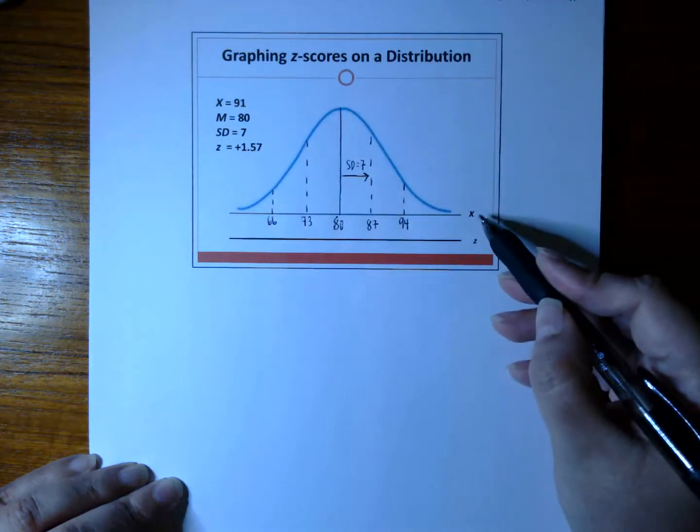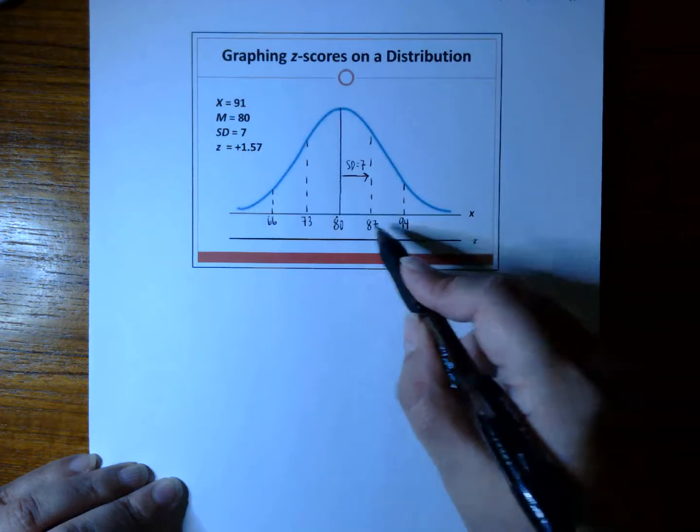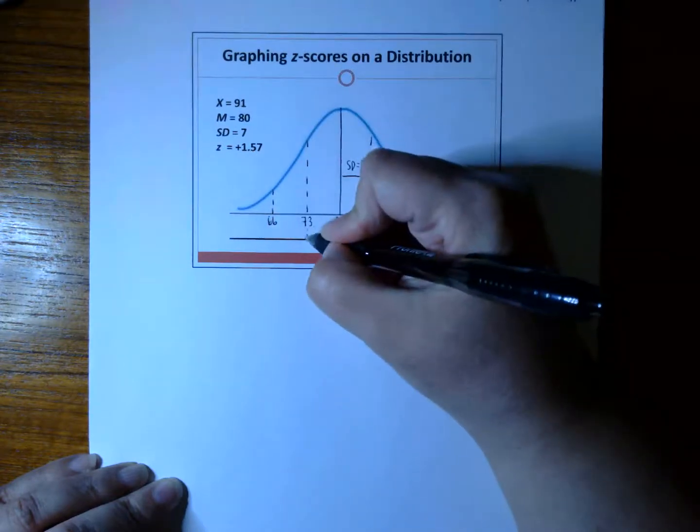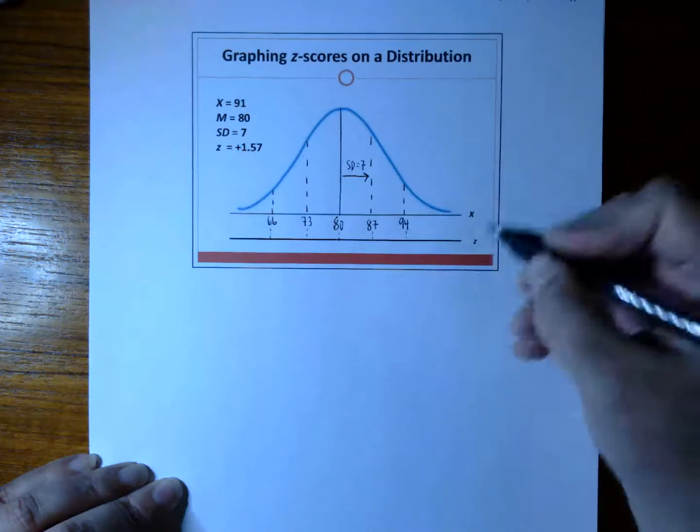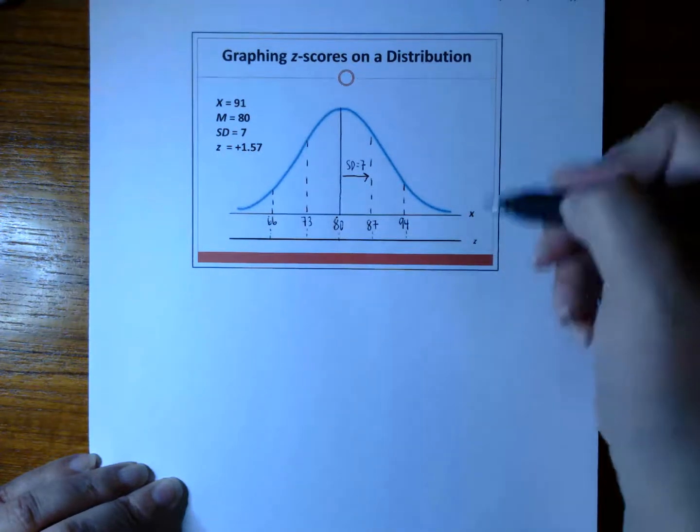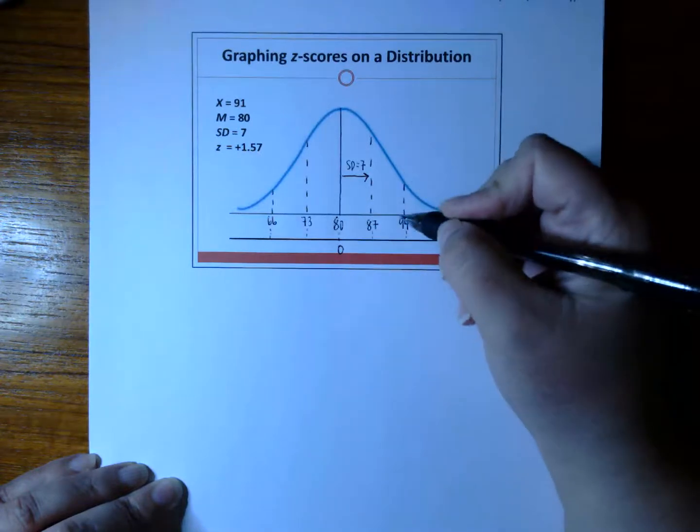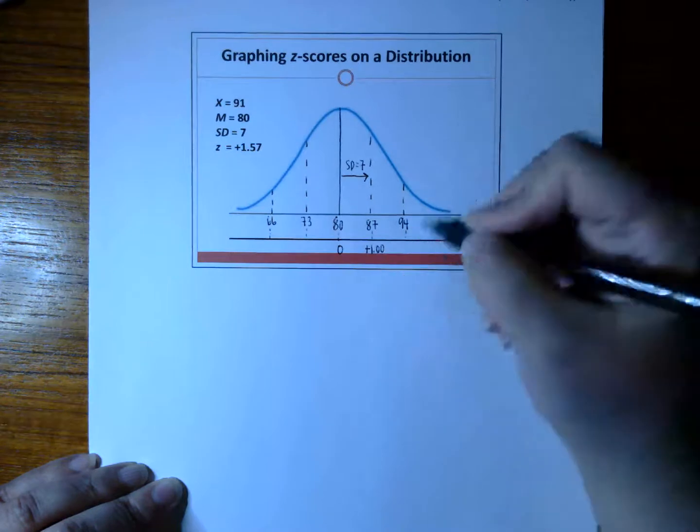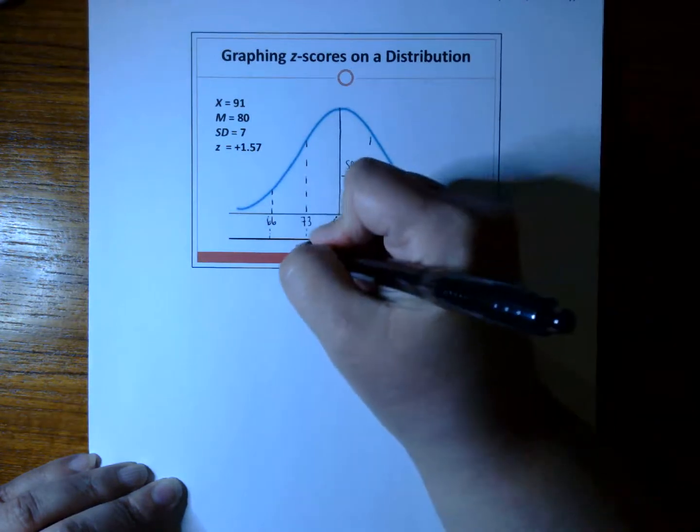This is what the X-scores would be if we graphed it. But if we kind of just drag that line down, all the way down to the Z-score, we know that a Z-score at the mean is always 0, and one standard deviation above, and two standard deviations.